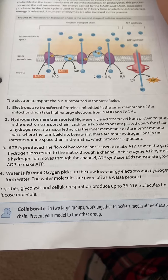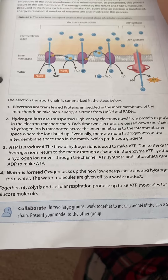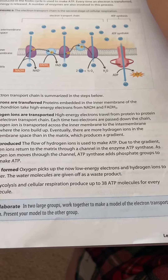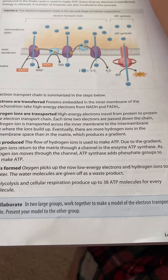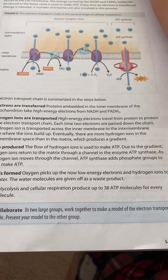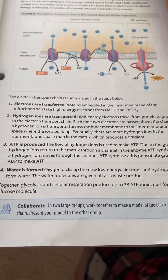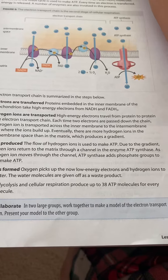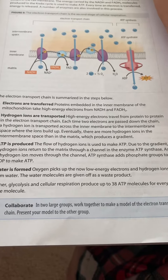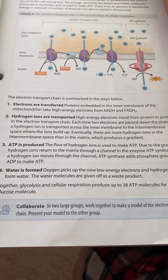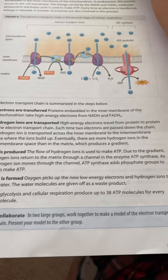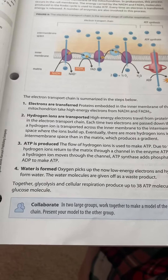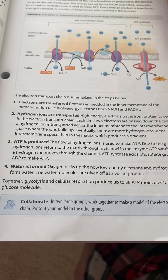More hydrogen ions in the intermembrane space than in the matrix produces a gradient. ATP is produced. Four hydrogen ions are used to make one ATP. Hydrogen ions move to the matrix through the enzyme ATP synthase, adding phosphate groups to ADP to make ATP.